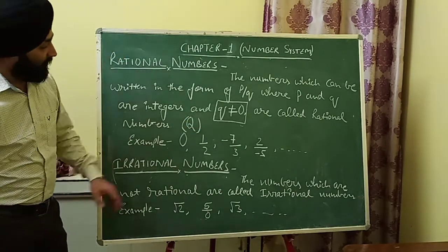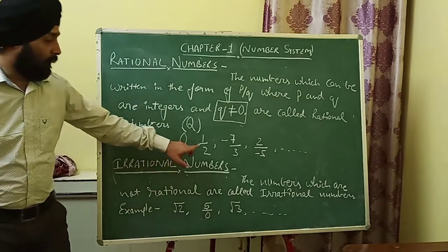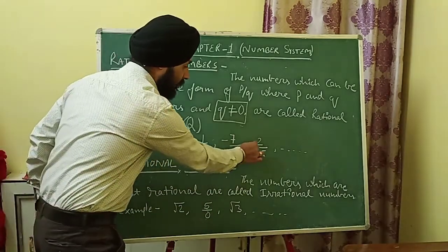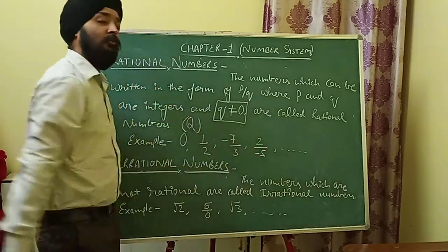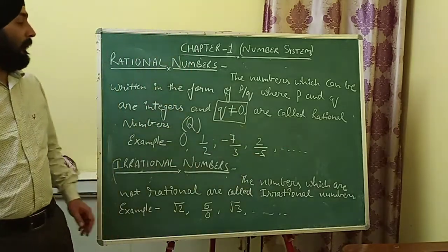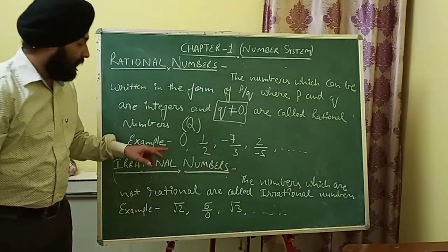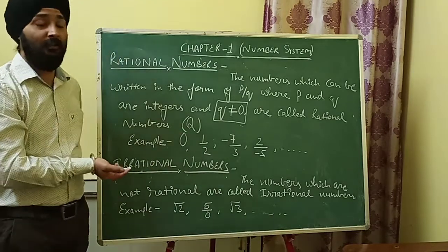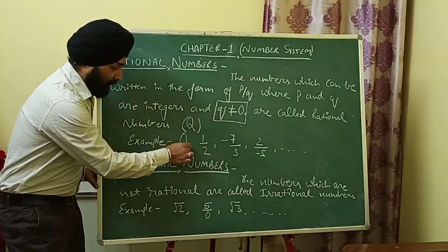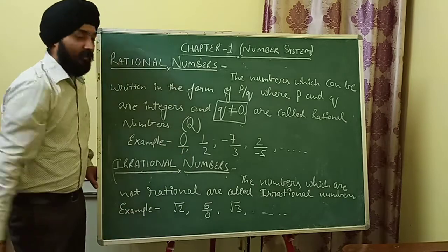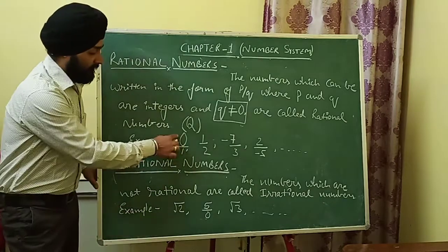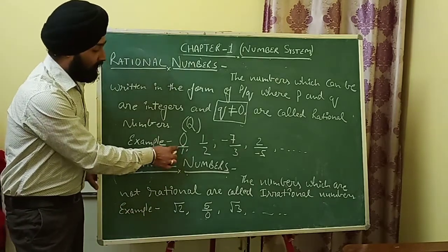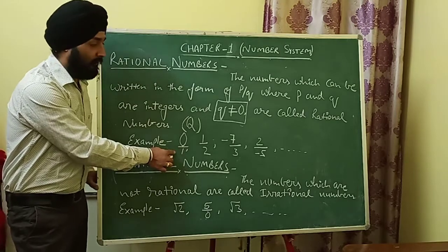For example: 0, 1/2, -7/3, 2/(-5) and so on are rational numbers. Some students ask whether zero is rational — yes, because it can be written as 0/1, which is in the form of p upon q. So zero is a rational number.